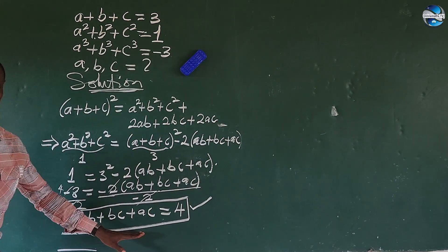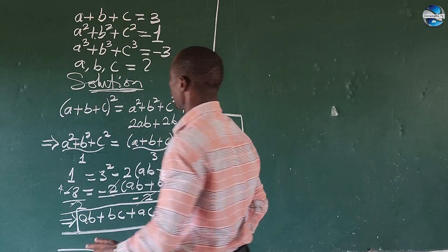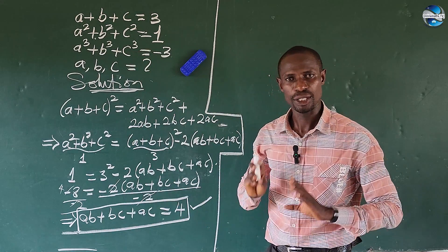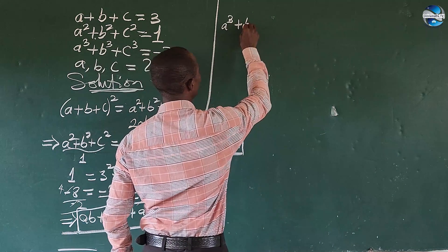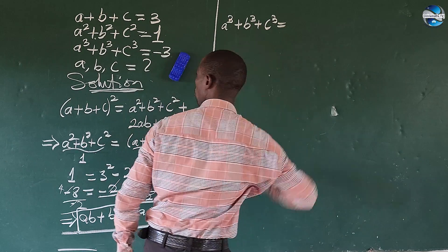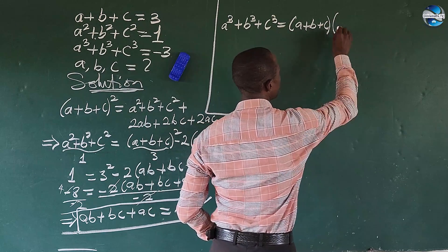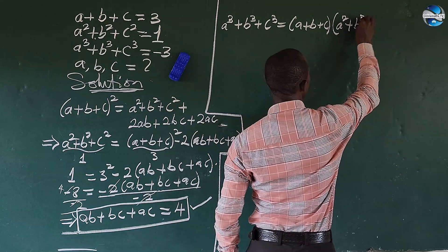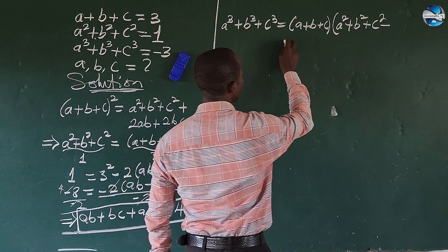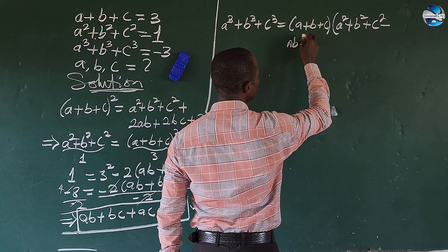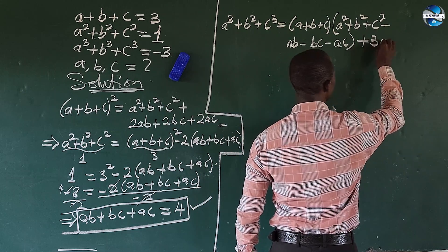Now let's go to the third equation. We have an algebraic identity: a cubed plus b cubed plus c cubed equals the bracket a plus b plus c, times the bracket a squared plus b squared plus c squared minus ab minus bc minus ac, close bracket, plus 3abc.